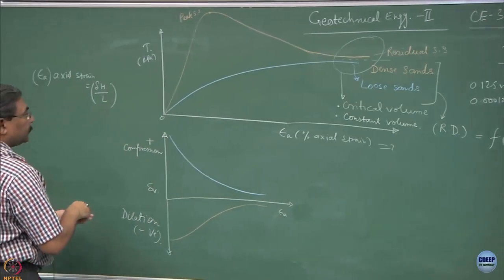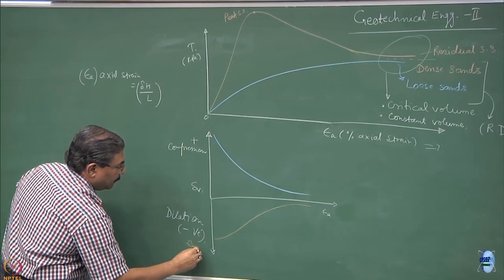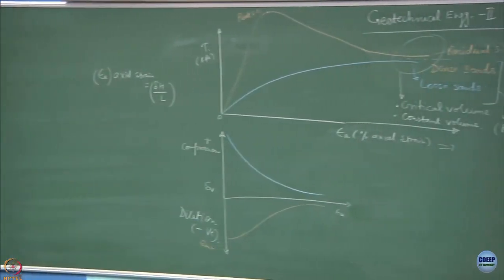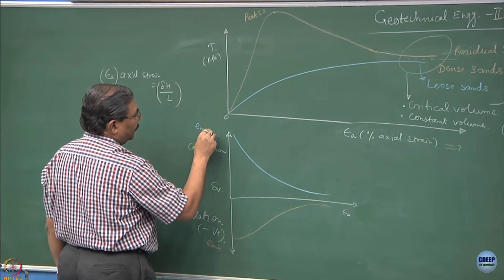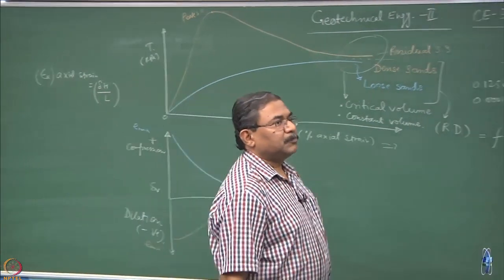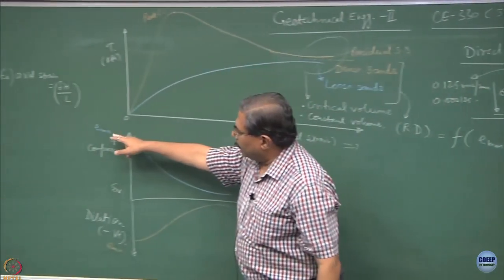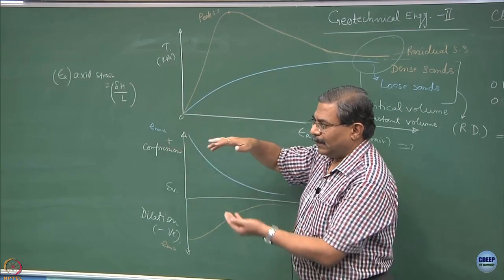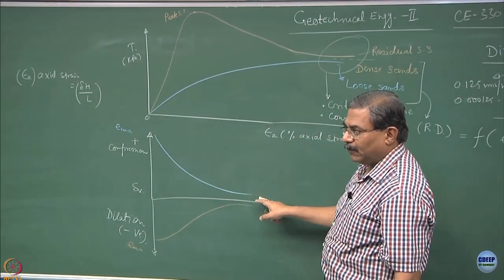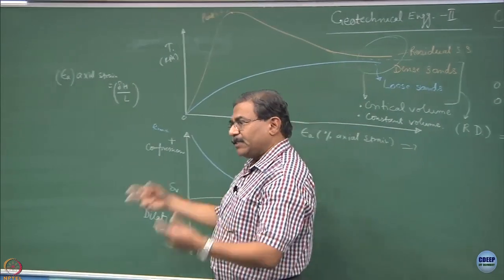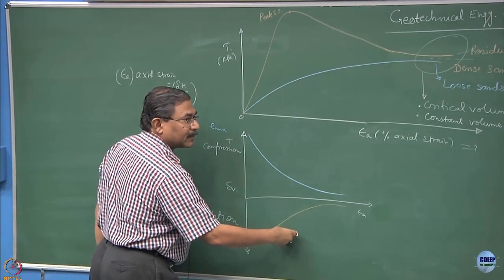Dilation occurs when the void ratio is minimum. That is the dense state of the material. Compression will occur when the material starts from E max. When you are shearing the material starting from a very high void ratio, the material gets compressed, compression takes over. Ultimately, a state of constant volume comes. When you shear a material from a very dense state, what it does? It defies the confining stress and it dilates.